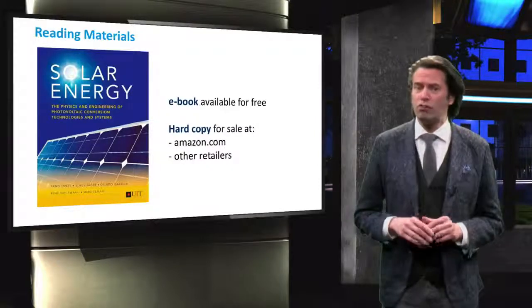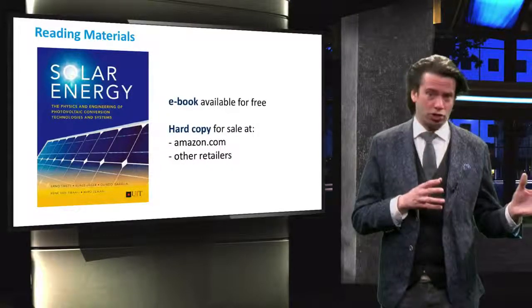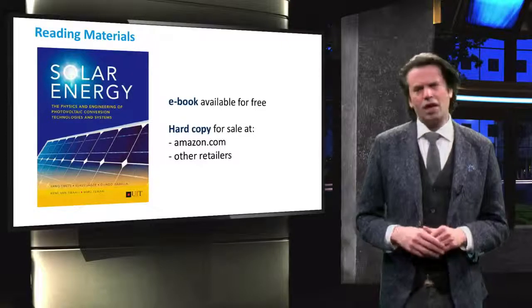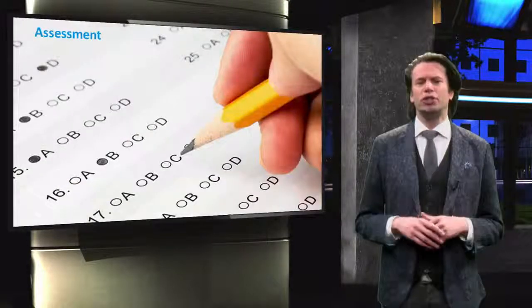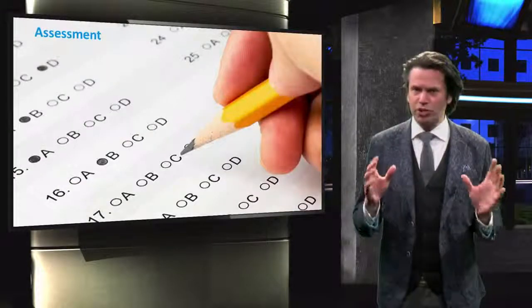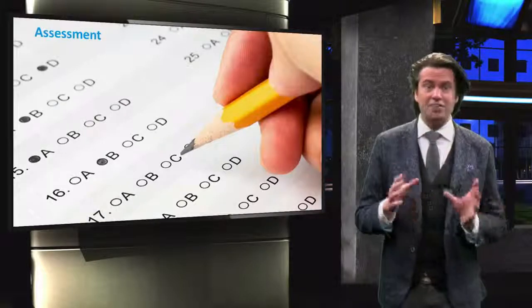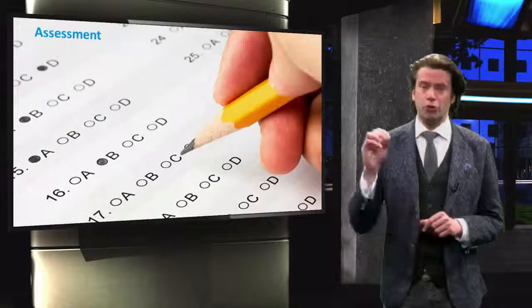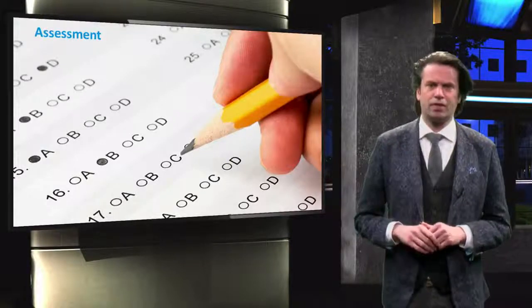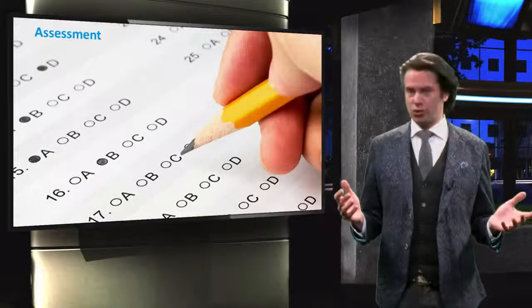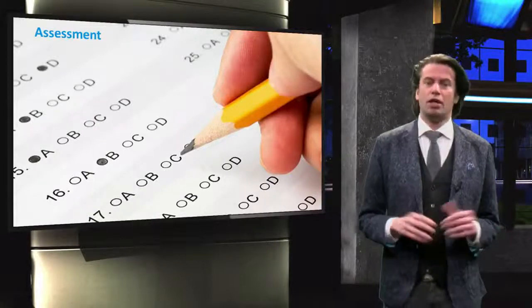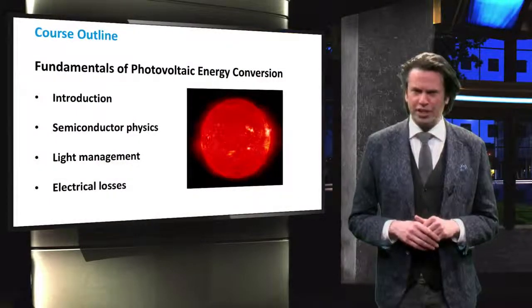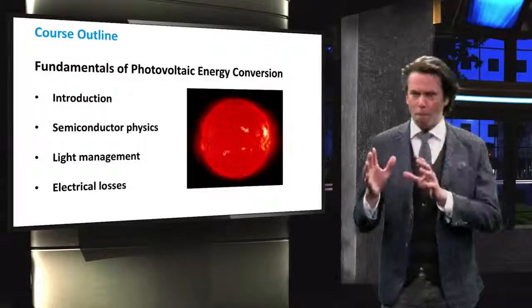Hard copies are also available for purchase at Amazon.com as well as other retailers. Now let's move to the assessment. The assessment consists of exercises and a final exam. Please read the information about grading carefully. Let's look at the course content. The course, Photovoltaic Energy Conversion, is split into four parts.